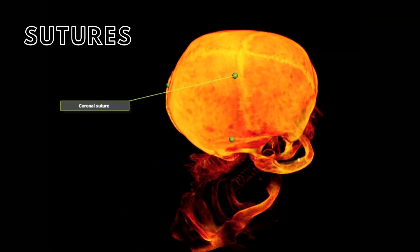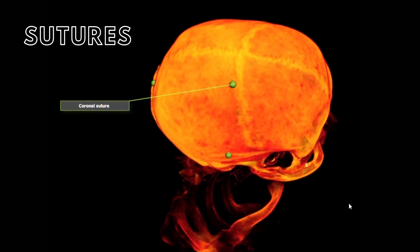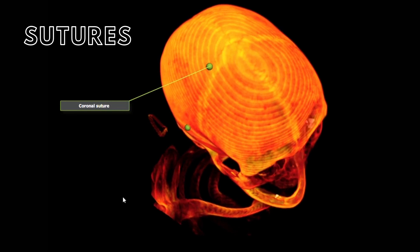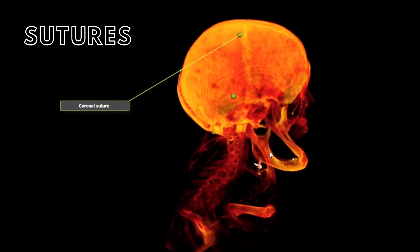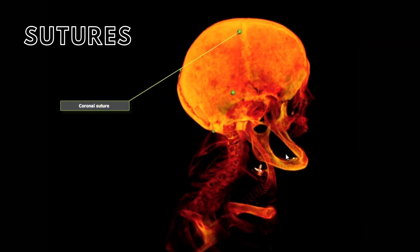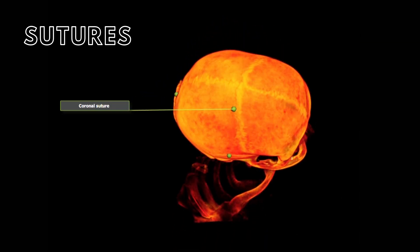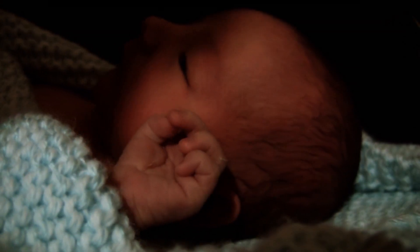Sutures are fibrous bands of tissue that allow for no movement and connect the bones of the cranium. However, they are not always like this. For about the first 12 to 18 months, the cranial bones are separate and the sutures are flexible. During the birth process, flexible sutures allow the flat bones of the skull to move and overlap one another, making the baby's head smaller and the birth process easier without pressing on or damaging the infant's brain.